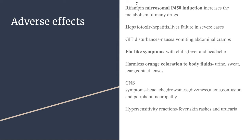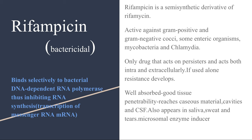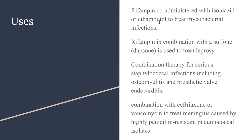Rifampicin has many side effects but is also effective against a broad spectrum of bacteria. It can be administered with dapsone in leprosy, with isoniazid in tuberculosis, with vancomycin in resistant Staph infections, with doxycycline in brucellosis, and combined with vancomycin or ceftriaxone in pneumococcal meningitis.